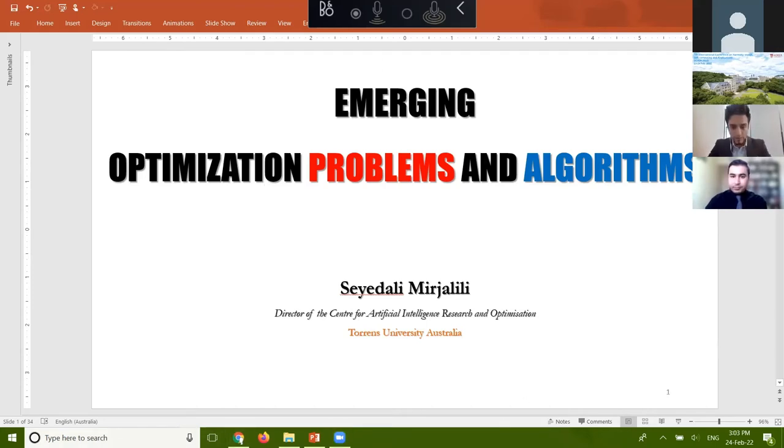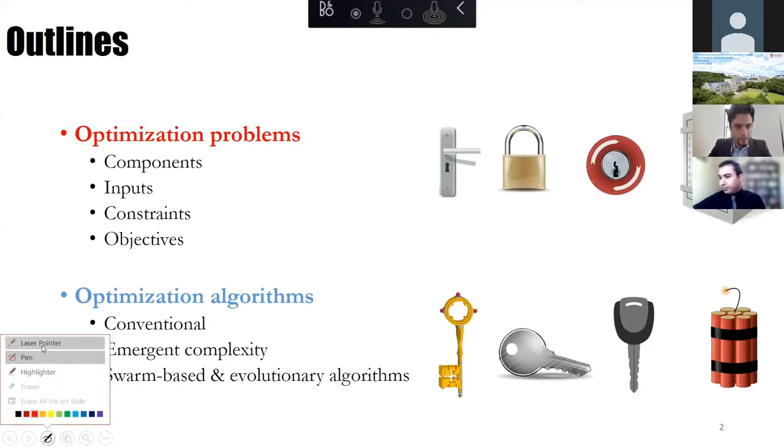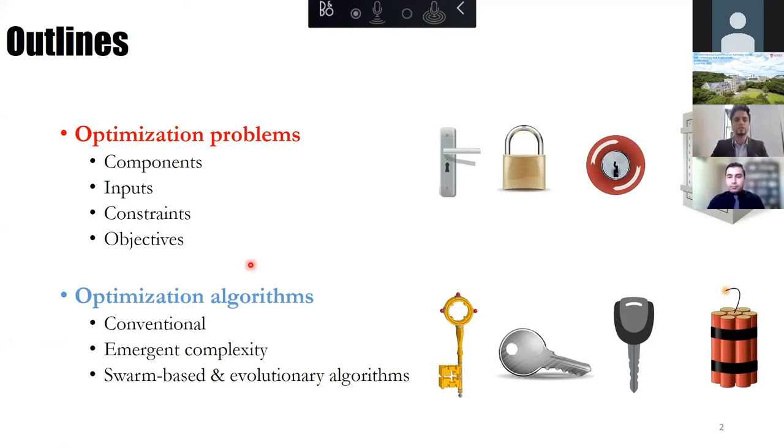Here's a quick snapshot of what we are going to be going through today. My presentation is divided into two parts. The first part is about optimization problems, focusing on the key components and the workflow with decision makers to ensure that we can help them solve their optimization problems, then followed by optimization algorithms. My intention is to go through some of the issues with traditional optimization algorithms and also discuss and answer a very important question: why we are seeing a lot of nature-inspired algorithms these days, and that's around emergent complexity theory as well.